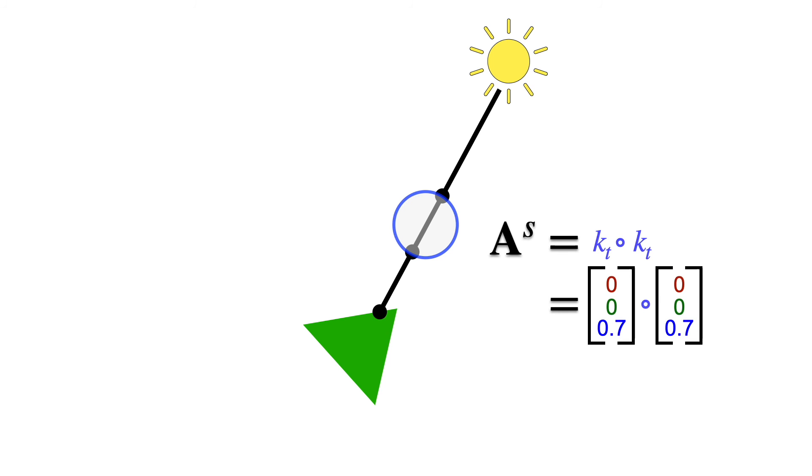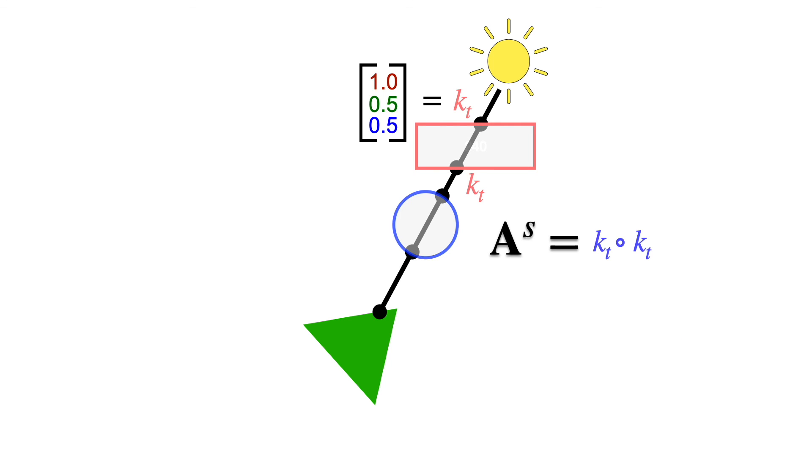So if kT attenuates all but 0.7 of the blue light, leaving about a third, after two intersections it will attenuate about half. And if there's another transparent object on the way to the light source, its coefficients are multiplied in as well.